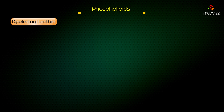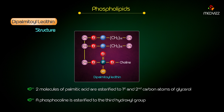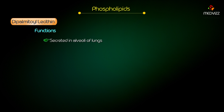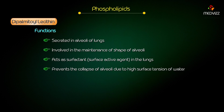Dipalmitolecithin — structure. Two molecules of palmitic acid are esterified to the first and second carbon atoms of glycerol. A phosphocholine is esterified to the third hydroxyl group. Functions: it is secreted in the alveoli of the lungs. It is involved in the maintenance of the shape of alveoli. It acts as a surfactant or surface active agent in the lungs and prevents the collapse of alveoli by reducing surface tension of water.